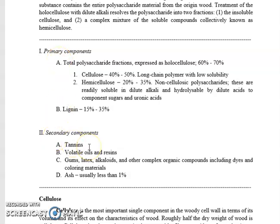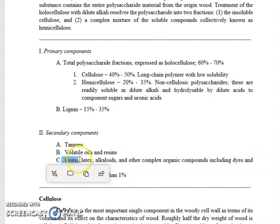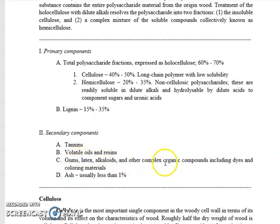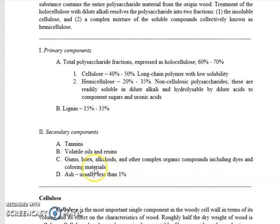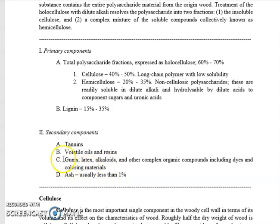Another secondary component of the cell wall includes gums, latex, alkaloids, and other complex organic compounds including dyes and coloring materials. First of all, gums.